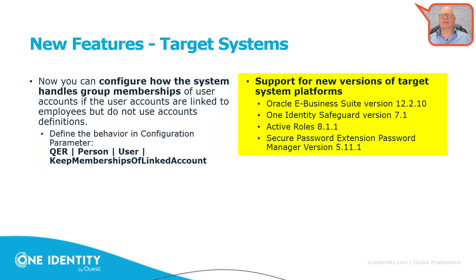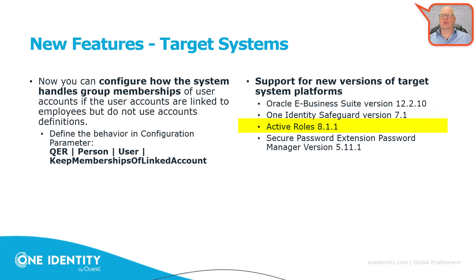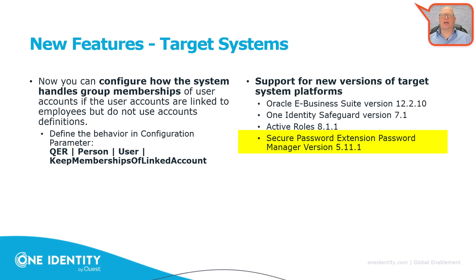On the right-hand side of the slide, we are talking about new support for target system platforms. With 9.1.1, some new versions of target system platforms are supported: Oracle eBusiness 12.2.10, One Identity Safeguard Version 7.1, Active Roles Version 8.1.1, and the Secure Password Extension Password Manager 5.11.1.